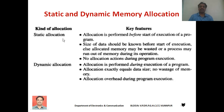To summarize: static memory allocation is one in which memory allocation is performed before program execution. It leads to wastage of memory space, but the advantage is that it is simple to implement and there is no execution overhead during program execution. On the other hand, dynamic memory allocation is one where memory space is allocated during execution of the program. Since memory allocated to the program equals its actual requirement, there is no wastage of memory space, but there is allocation overhead during execution.